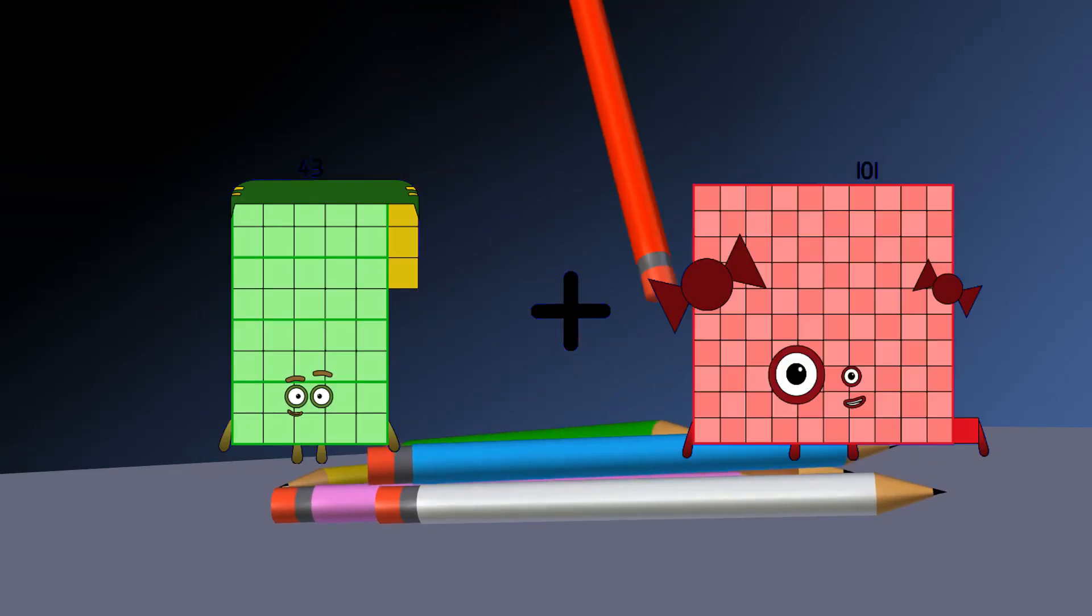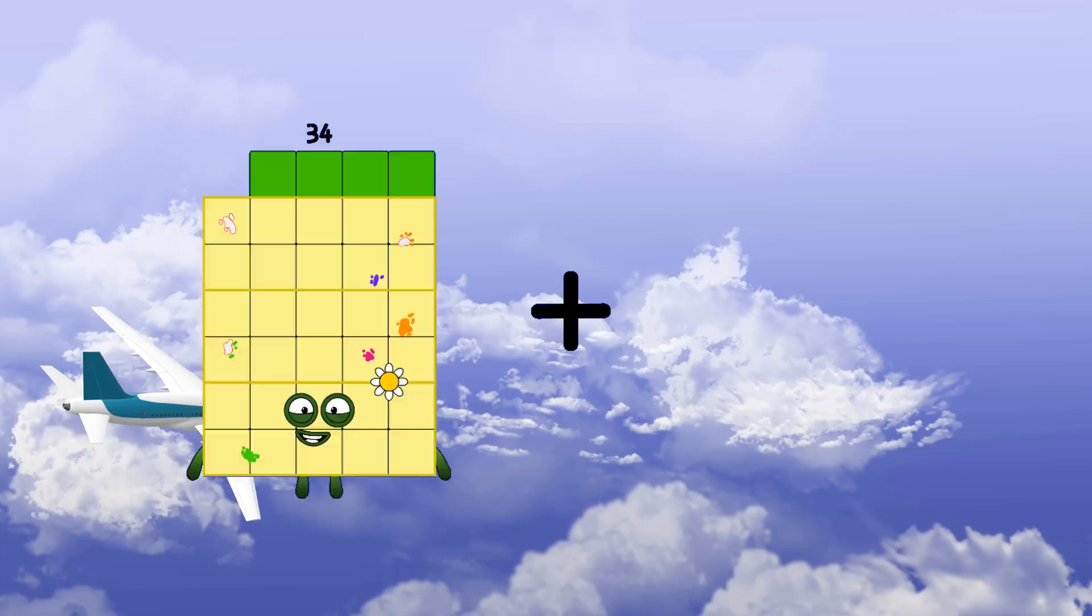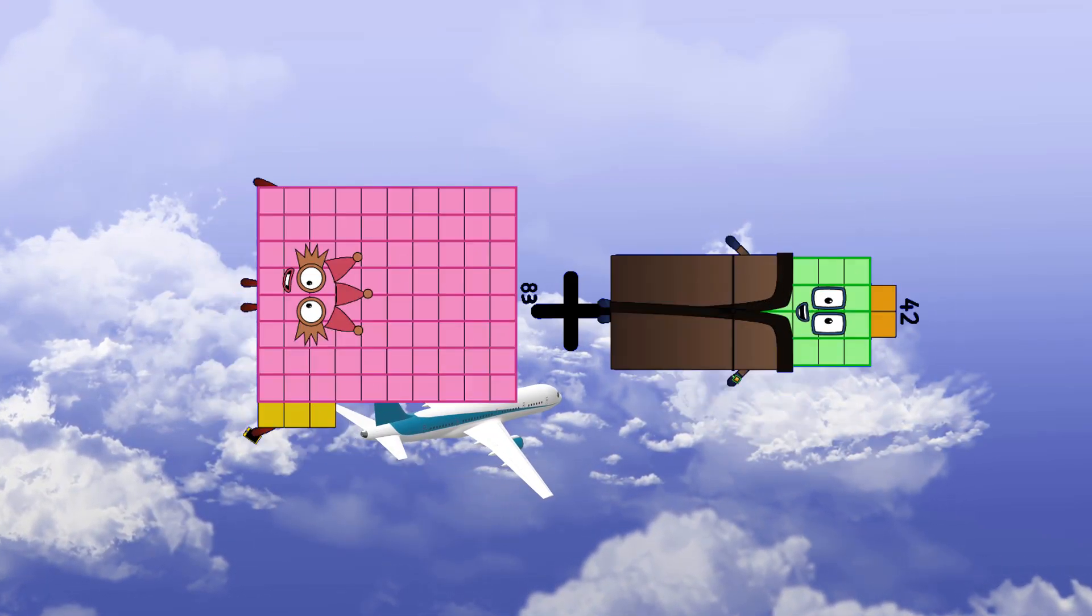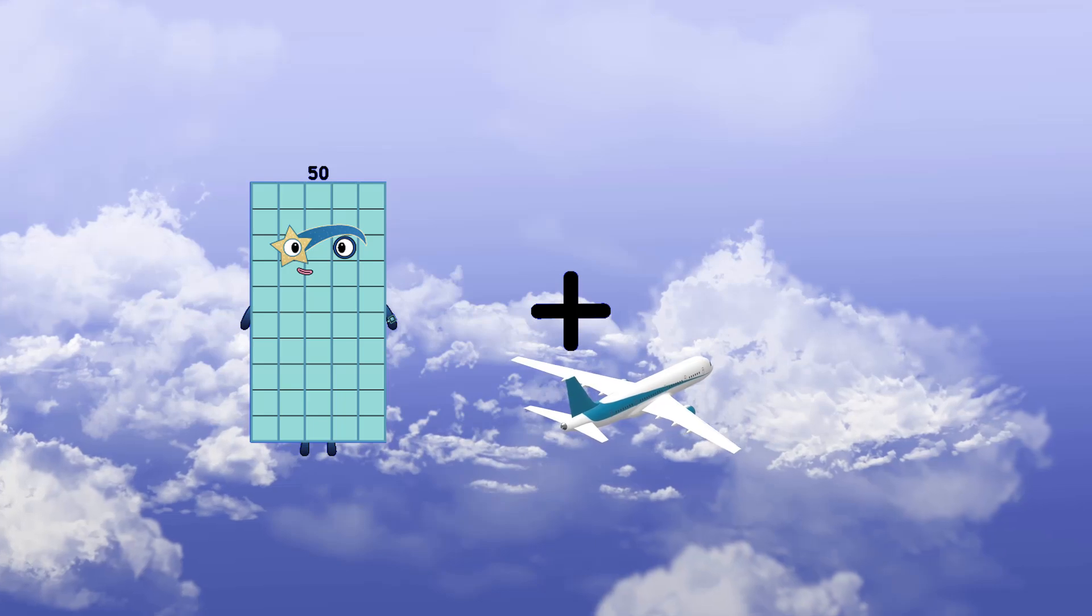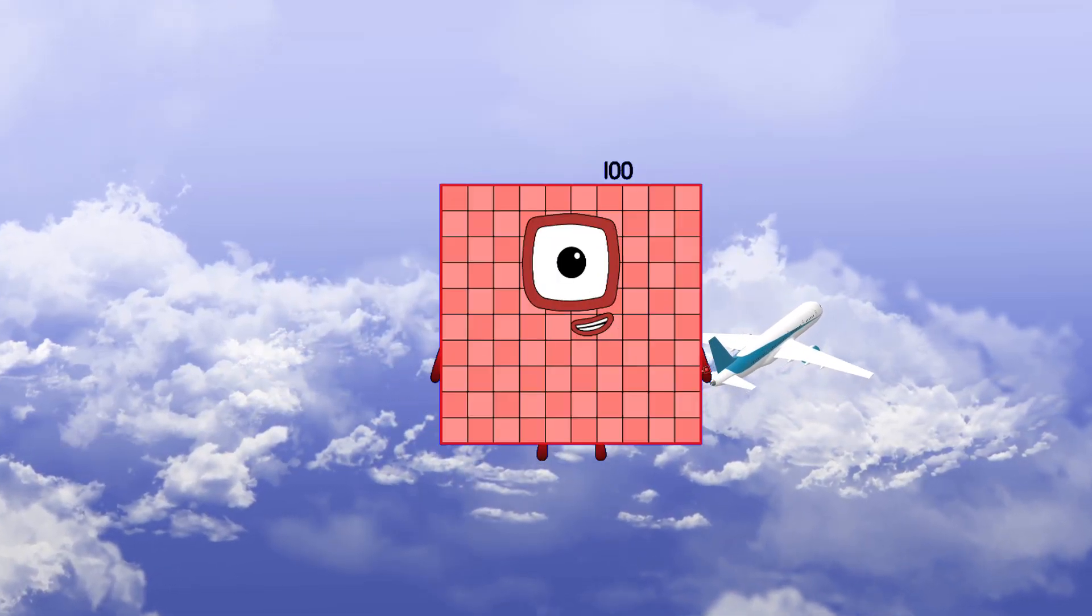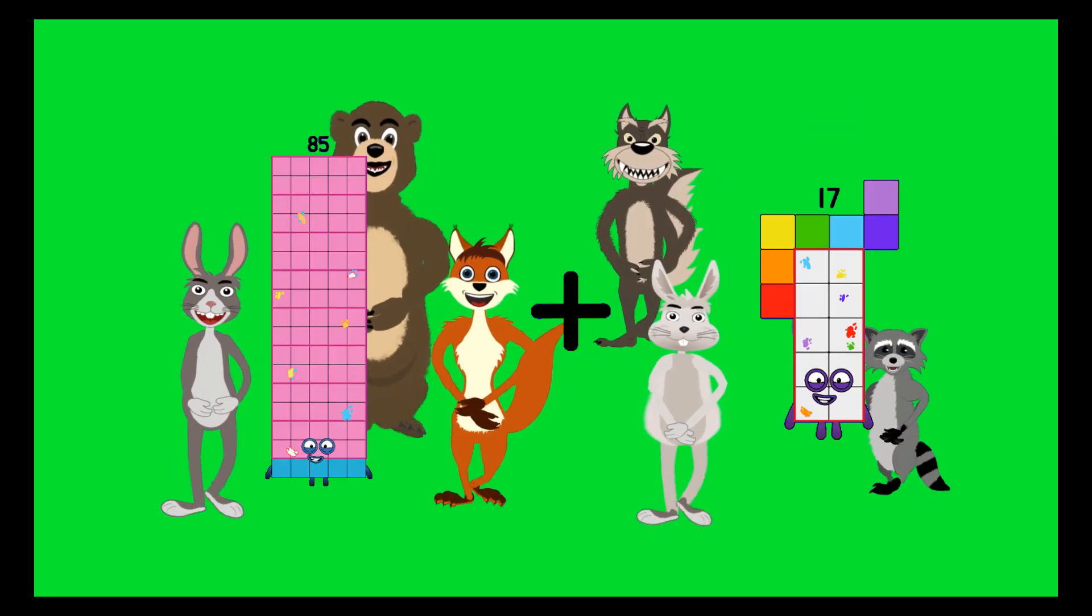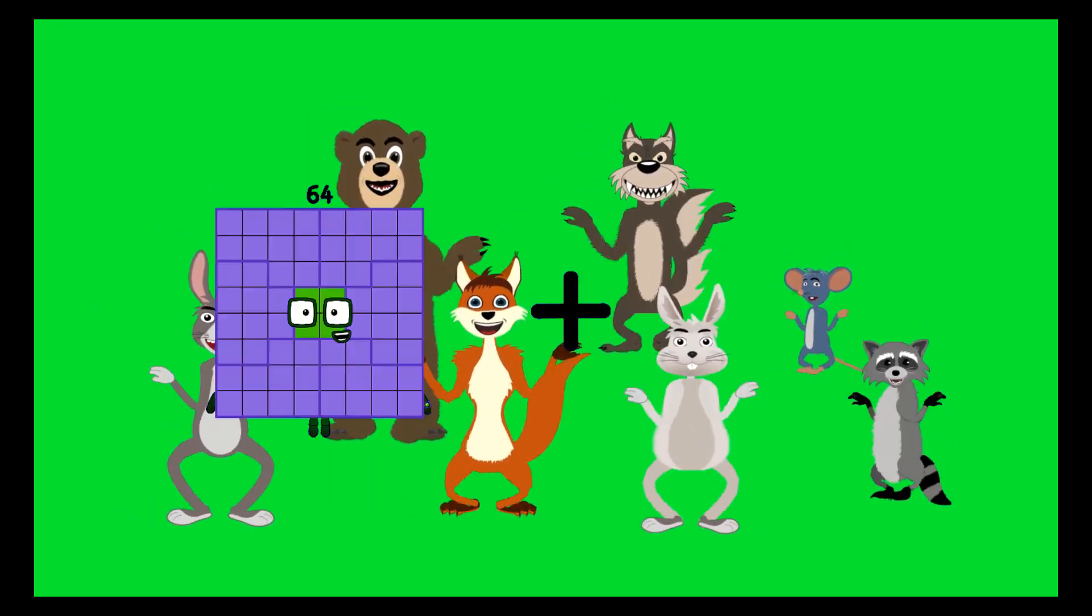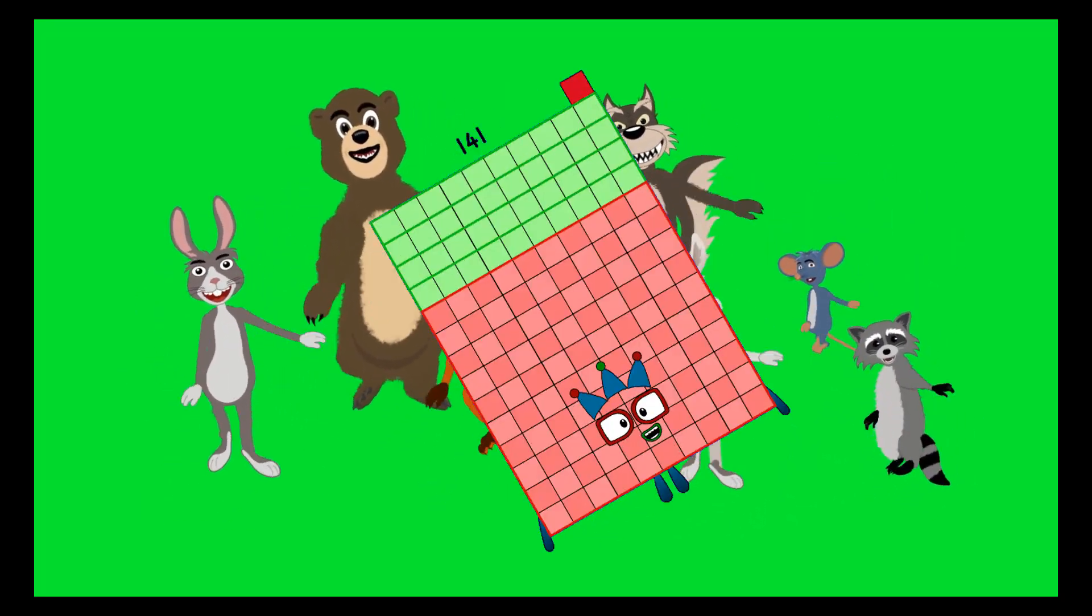43 plus 22 equals 65. 83 plus 42 equals 125. 42 plus 50 equals 100. 85 plus 17 equals 102. 53 plus 88 equals 141.